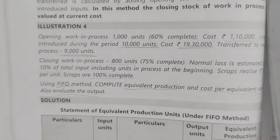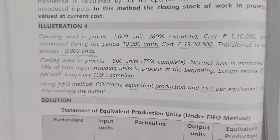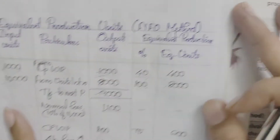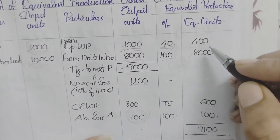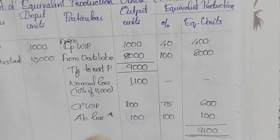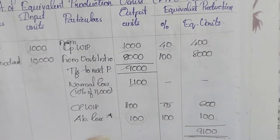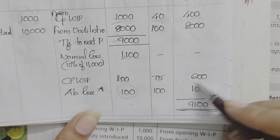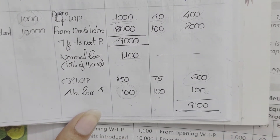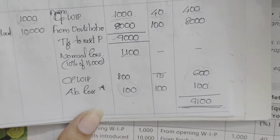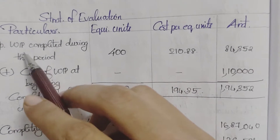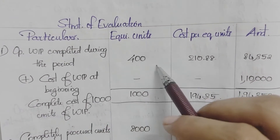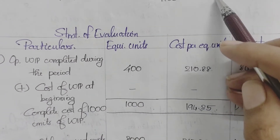We prepare the statement of equivalent units. Opening WIP equivalent units are 400, valued at cost per unit. The 8,000 units are also valued at cost per unit. Closing WIP 600 units valued at cost per unit. Abnormal loss 100 units valued at cost per unit.